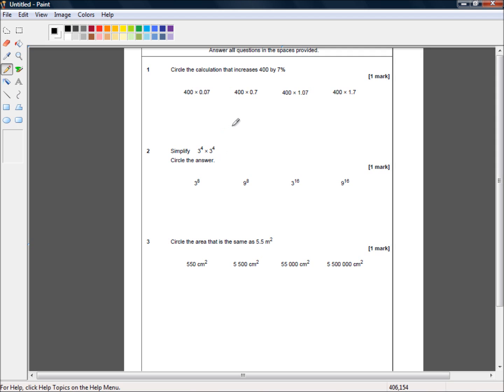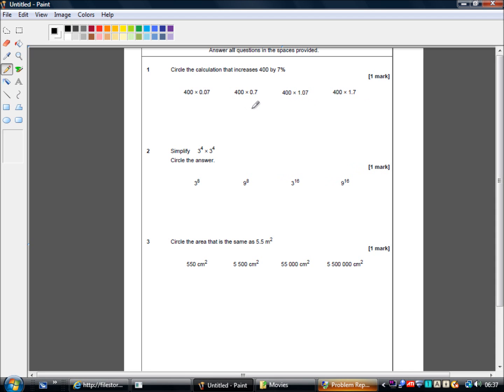Hello and welcome to question one of the 8300 sample paper for higher mathematics non-calculator page. It's higher mathematics and statistics. In this question we're asked, circle the calculation that increases 400 by 7%. It's only worth one mark so we're not looking to overthink this.